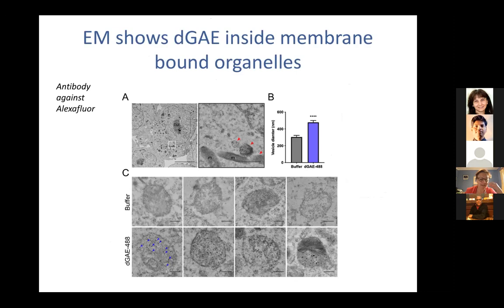We did some sections of the cells treated with DJE and found that DJE accumulates inside membrane-bound organelles — we don't know what these organelles are at this point and need to do more studies. We see tau accumulated within membrane-bound organelles, sometimes associated with other things. We distinguished these using an antibody against the Alexa Fluor tag rather than tau itself. More studies are needed to look in more detail at what's actually in these organelles.